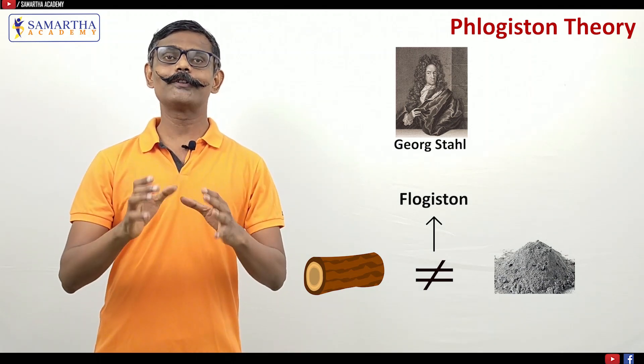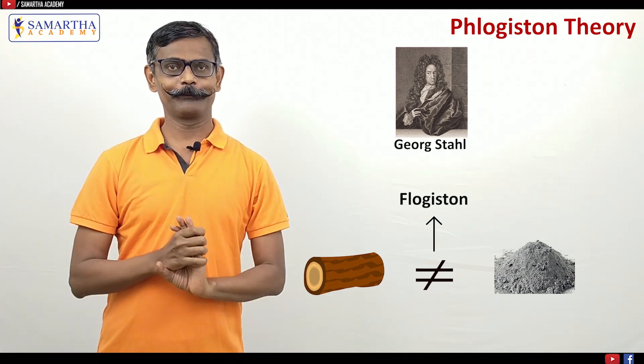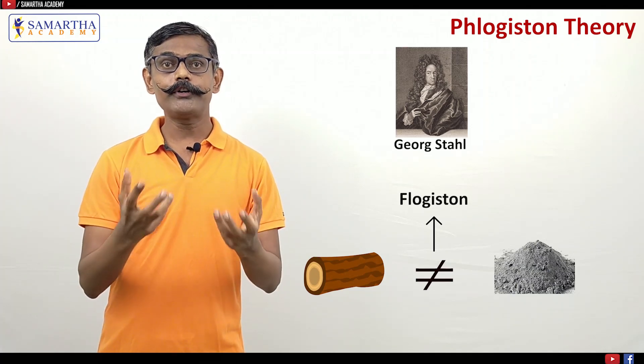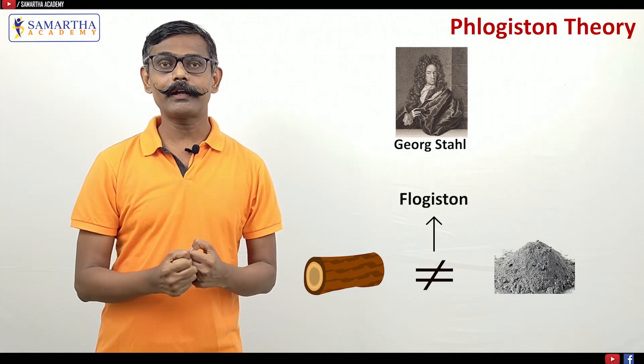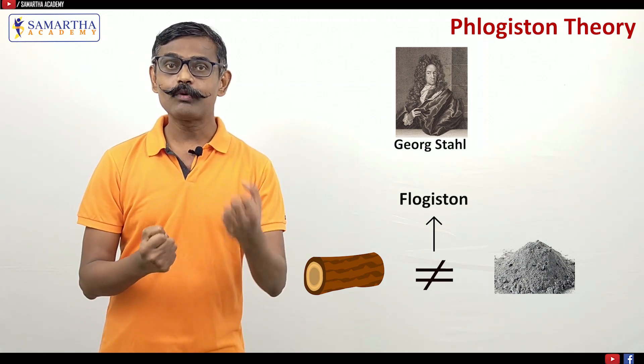Phlogiston was the material. Exactly what is that? They were not sure. Due to advancements in science, quantitative measurements were there. The quantity of the wood was measured. The ash was measured.